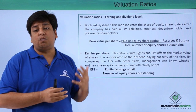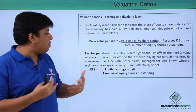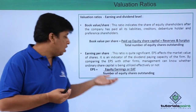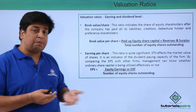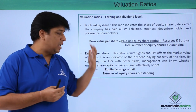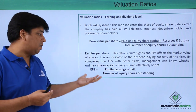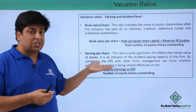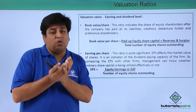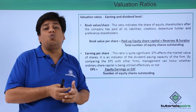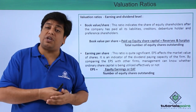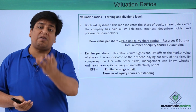Book value per share is a very important factor and can be compared with competing companies to see which company has a better book value per share. Similarly, EPS — earnings per share — is very important for calculation of the PE ratio. EPS tells us what is the earning of the company that belongs to a shareholder holding one share.